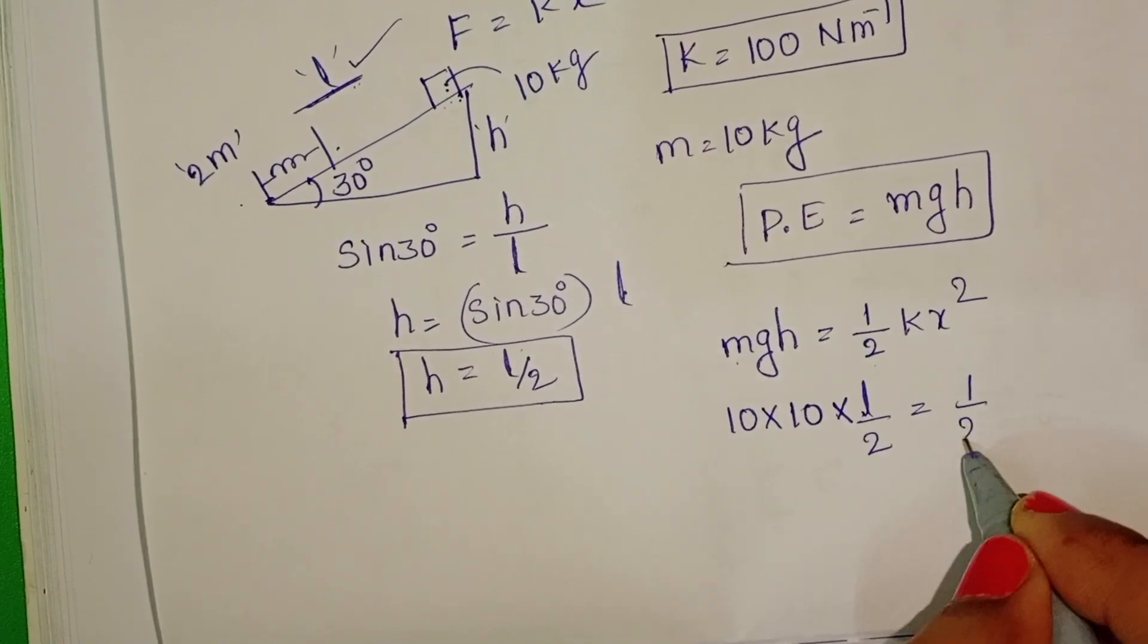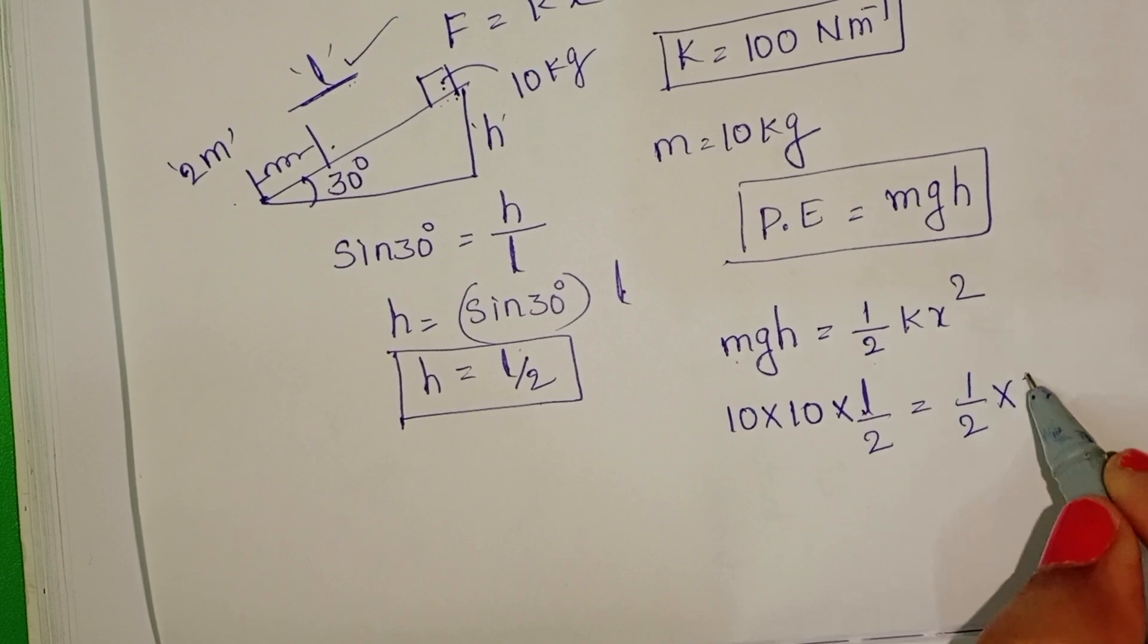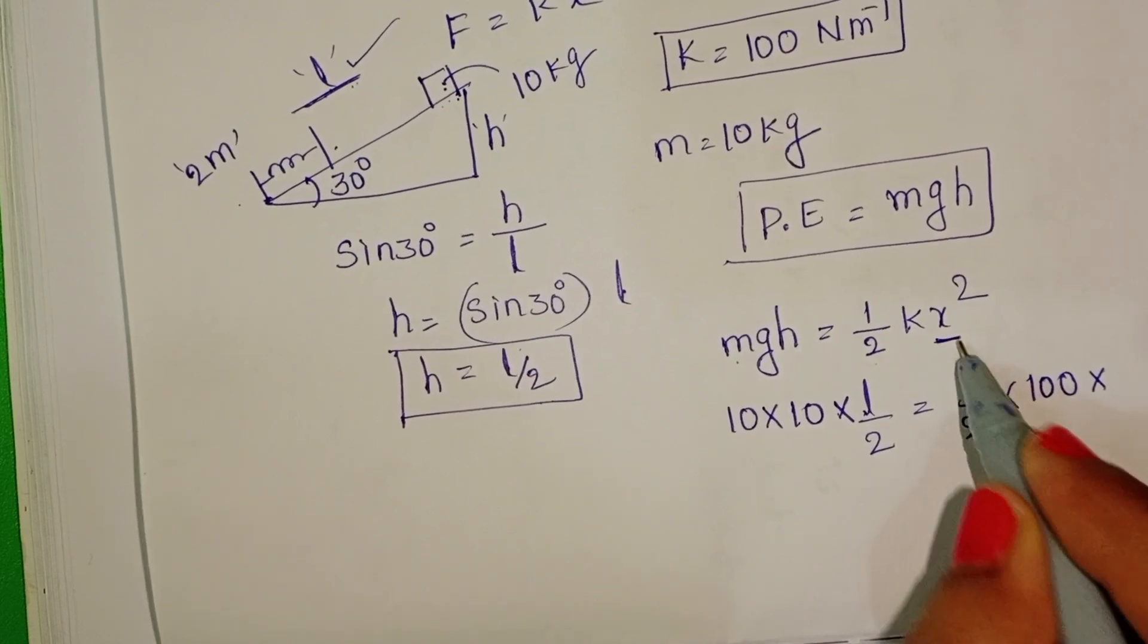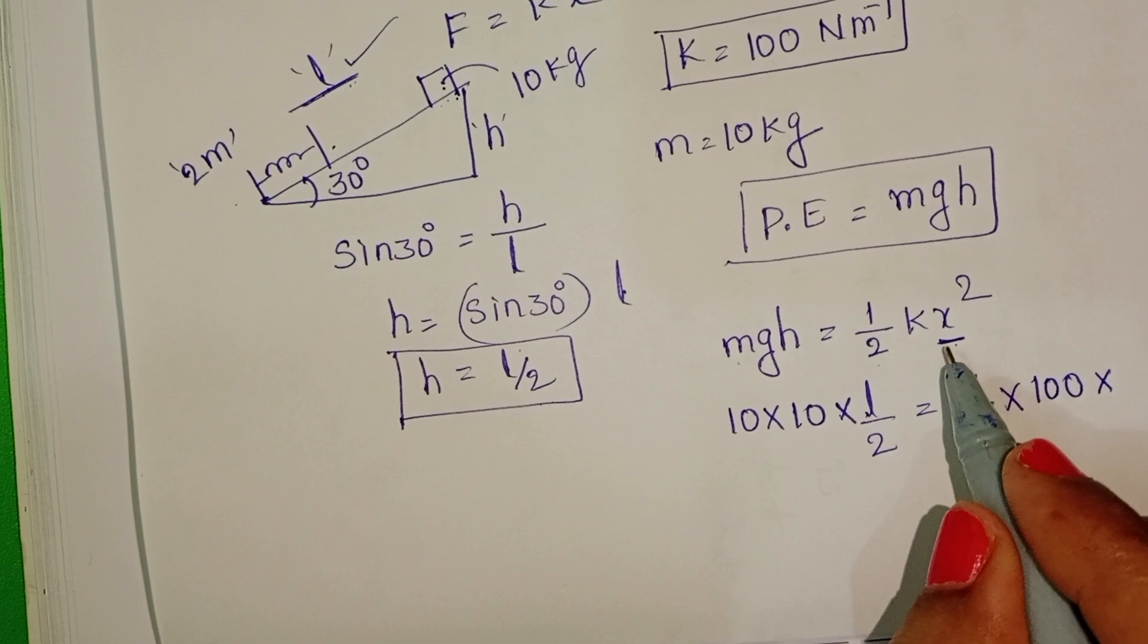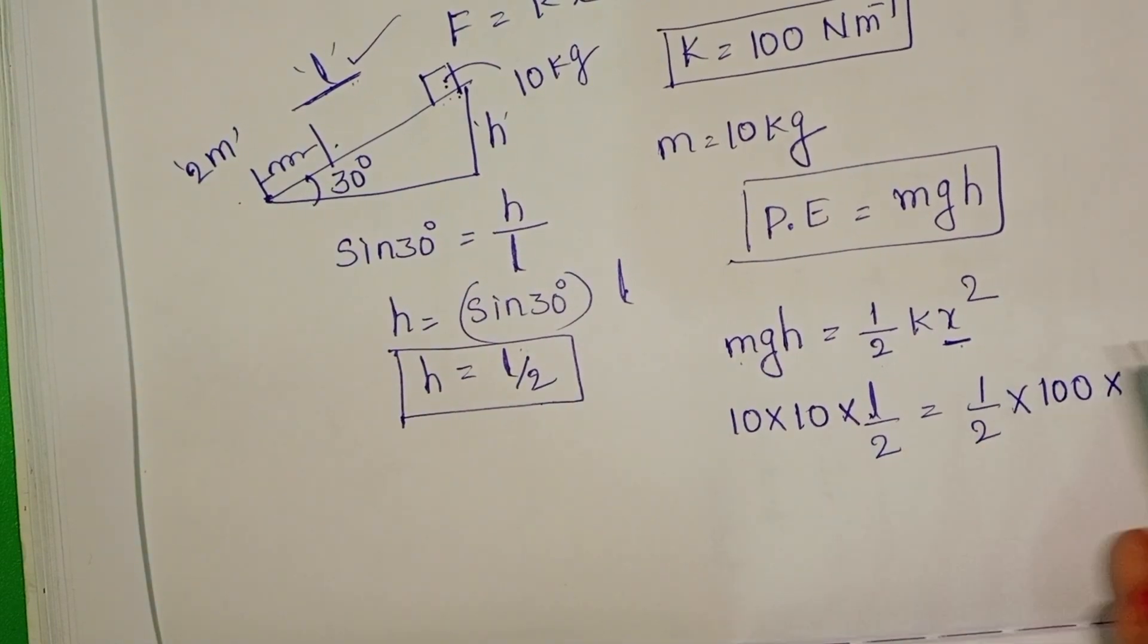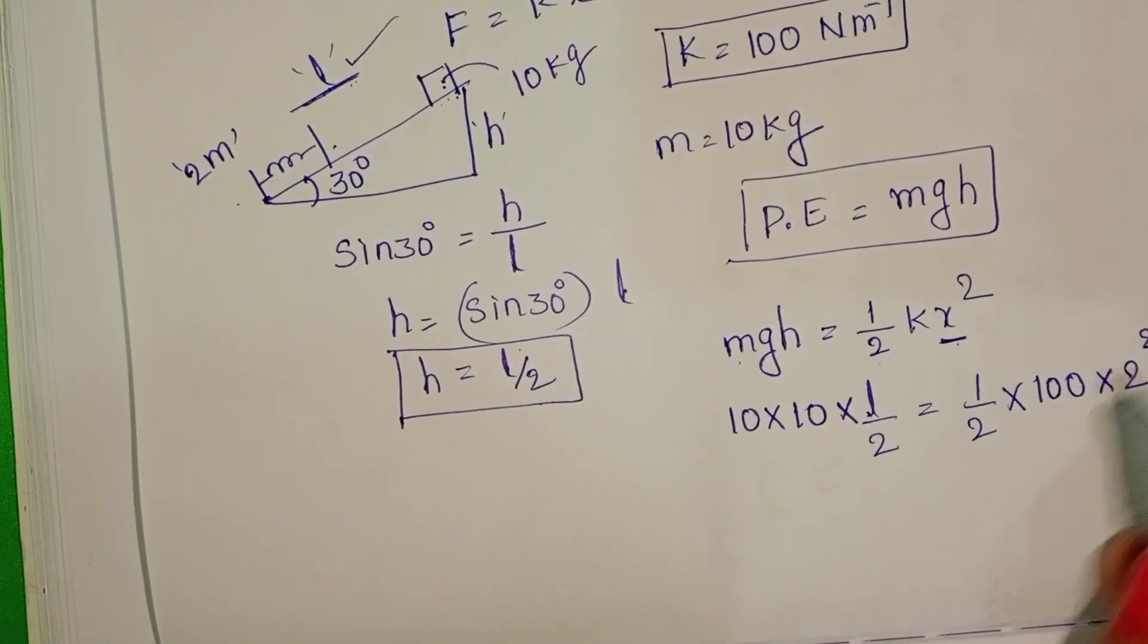Half. k value is 100 Newton per meter. x is the compression of the spring. Here compression of the spring is 2 meters. So 2 squared.